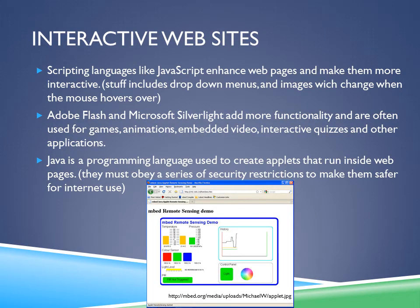Interactive Websites. Scripting languages like JavaScript enhance web pages and make them more interactive, enabling features like drop-down menus or images that change when the mouse hovers over them. Adobe Flash and Microsoft Silverlight add more functionality and are often used for games, animations, embedded video, interactive quizzes, and other applications. Java is a programming language used to create applets that run inside web pages — it is not the same thing as JavaScript. Java applets must obey security restrictions to make them safer for internet use.